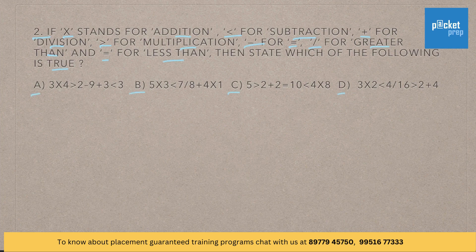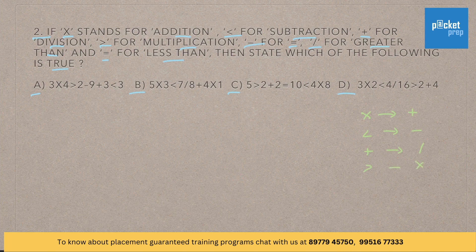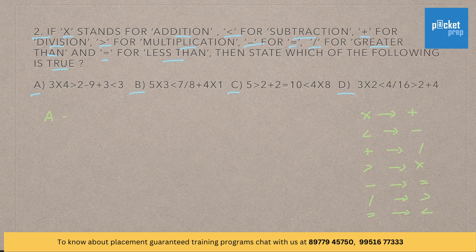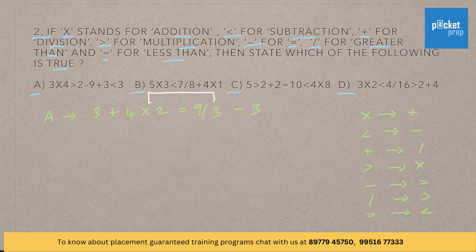He has given a set of options here. Let us write down what is given in the question: multiplication stands for addition, less than stands for subtraction, plus stands for division, greater than stands for multiplication, minus stands for equal to, division stands for greater than, and finally equal to stands for less than. By substituting it in each of the options, we get 3 plus 4 into 2 equals 9 divided by 3 minus 3. LHS is not equal to RHS. So this option is wrong.